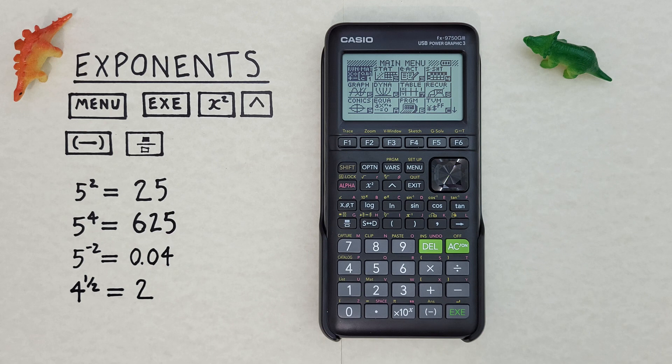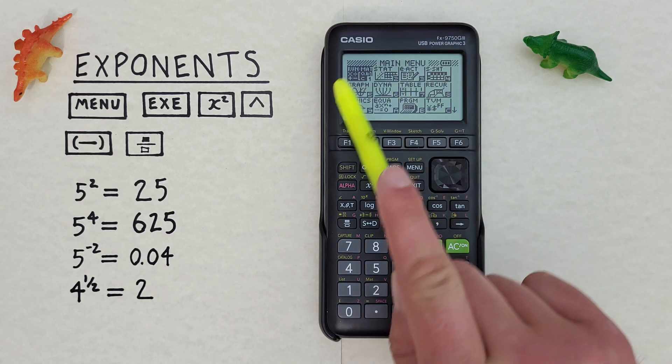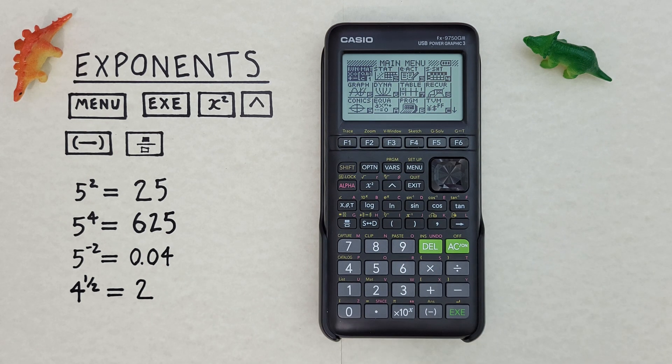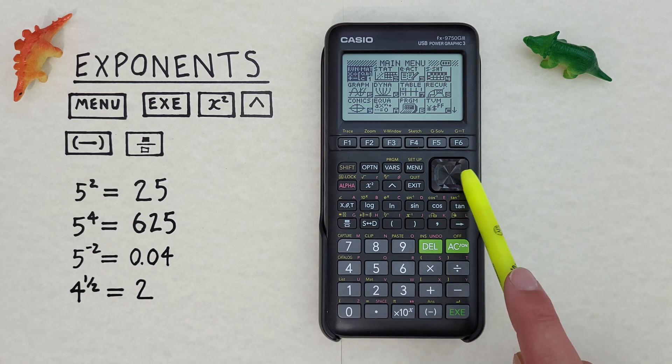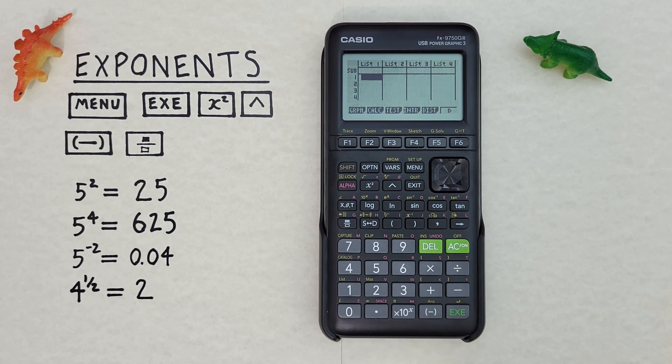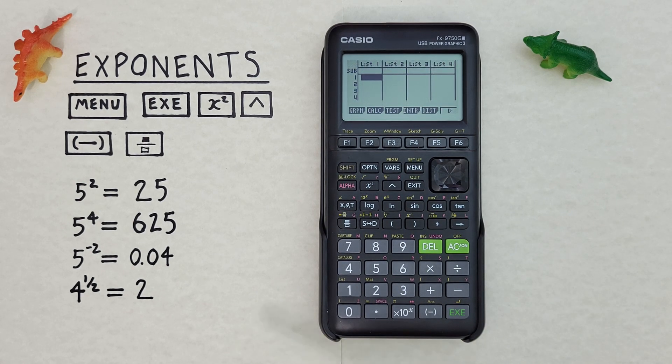When we first turn on our calculator we're usually in the main menu here. If we're not in the main menu, for example if we're in the stats mode, we can get to the main menu by pressing the menu key.